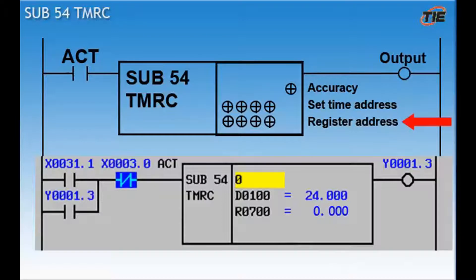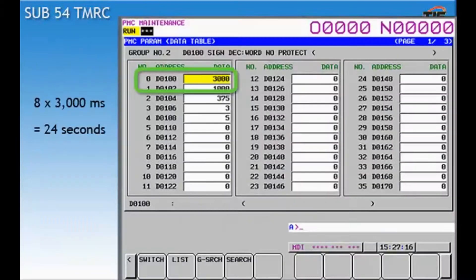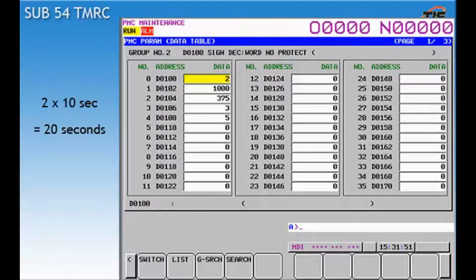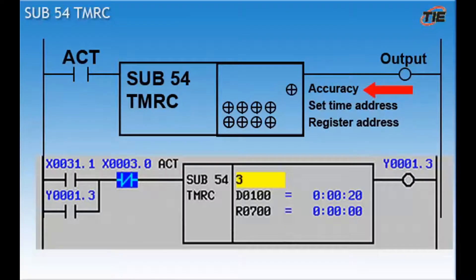The address that holds the time value is input on line 2. This is typically a data address. Note that this field will take two bytes of data. This means that if you set the starting address at D100, it will take addresses D100 and D101 to hold the timer value. This sub 54 statement is set up for an 8 millisecond accuracy. A setting of 3000 into D100 will produce a time value of 24 seconds. 8 times 3000 milliseconds equals 24 seconds. If I change the accuracy setting to a 3, this will give me an increment of 10 seconds. By setting D100 to a 2, I will end up with a 20 second timer. Timer ranges can be set from 8 milliseconds up to approximately 546 hours. That's a lot of time.